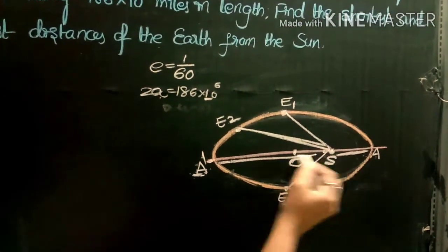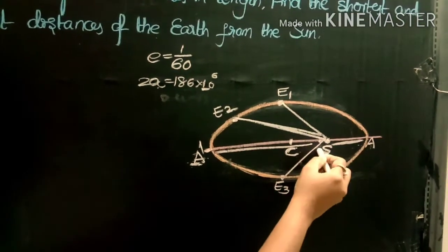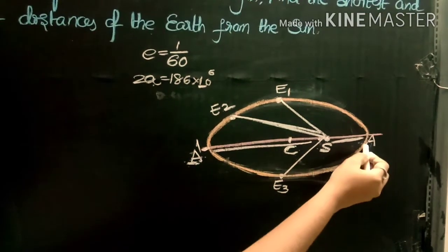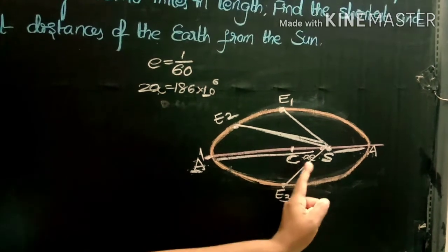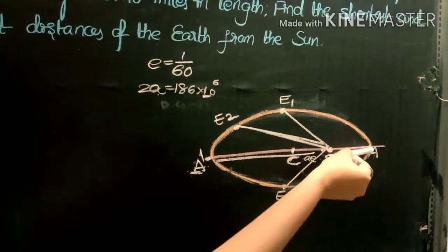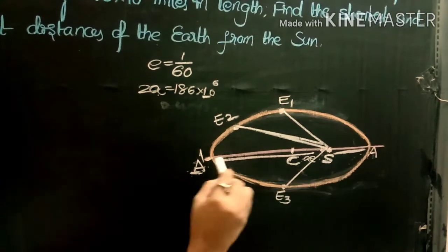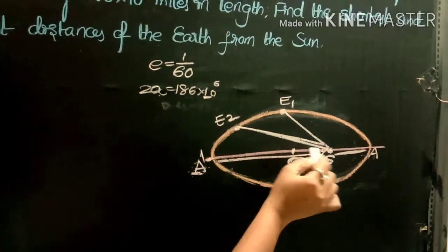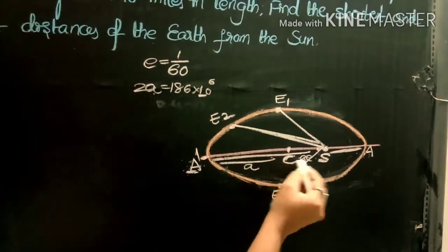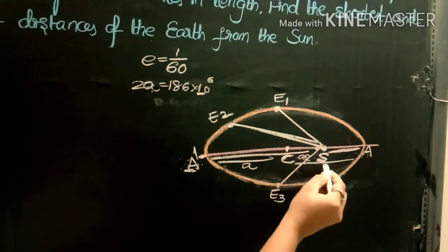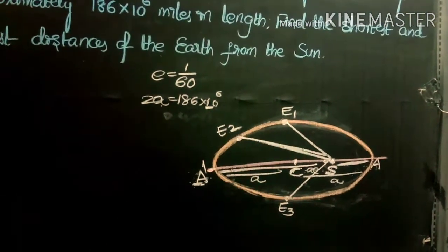We want the values of SA and SA'. SA is nothing but CA minus CS. CA equals small a, and CS equals ae (distance between center and focus). So SA = a - ae, and SA' = CS + CA' = ae + a. From the diagram, CA = CA' = a.